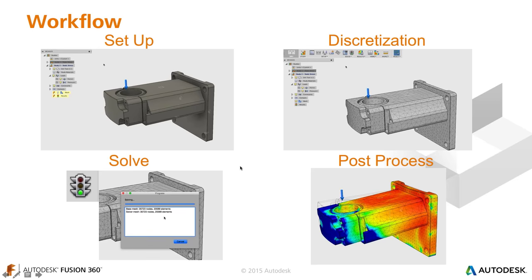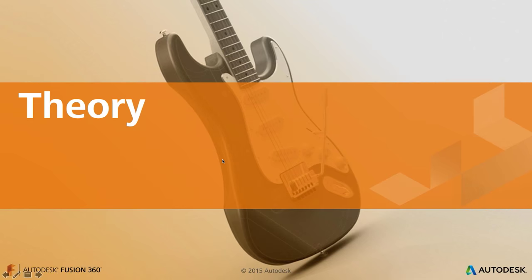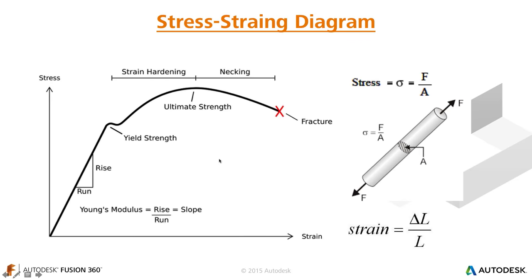Let's start with a little bit of theory. I always like to start finite element analysis back to theory. There is this thing called a stress-strain diagram — different diagrams exist for different materials. What we have here is the linear elastic region. Right now in Fusion 360, we only have a linear elastic stress solver. We can test in this region, and we need a linear slope, which is called Young's modulus.